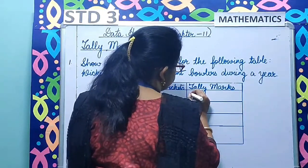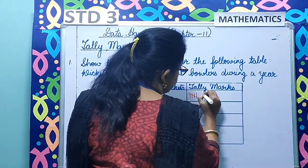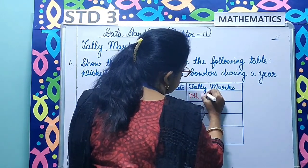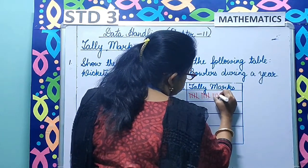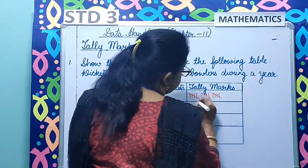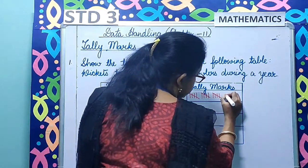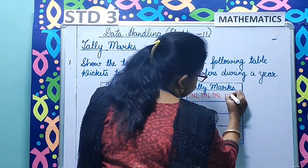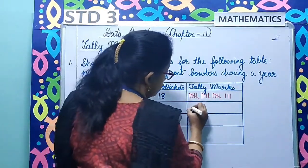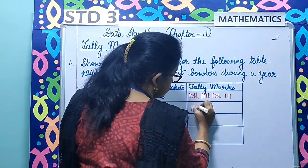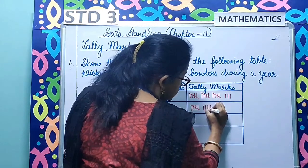So 18: 1, 2, 3, 4, 5 — group of 5. Again 1, 2, 3, 4, 5 — group of 5. Again 1, 2, 3, 4, 5 — group of 5. So 5 plus 5 is 10, plus 5 is 15, plus 16, 17, 18. Now 9: 1, 2, 3, 4, 5, 6, 7, 8, 9.